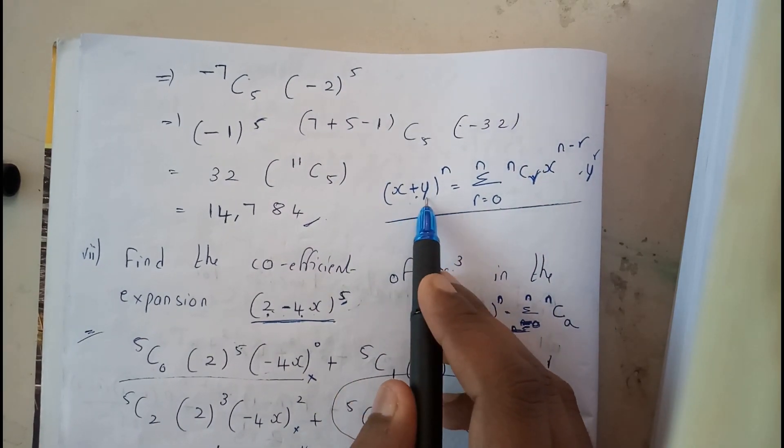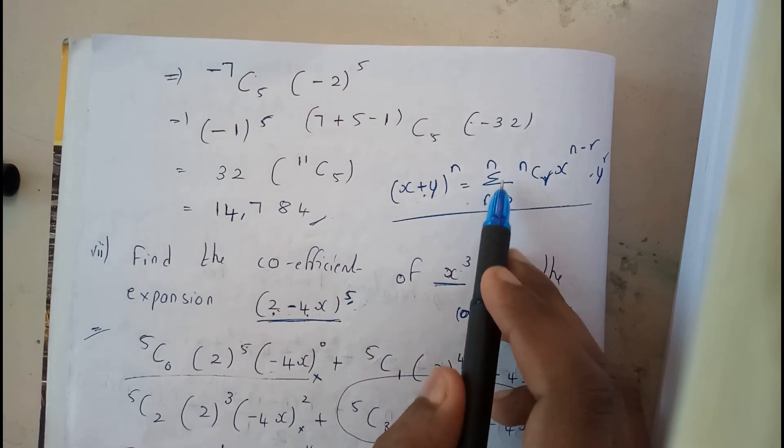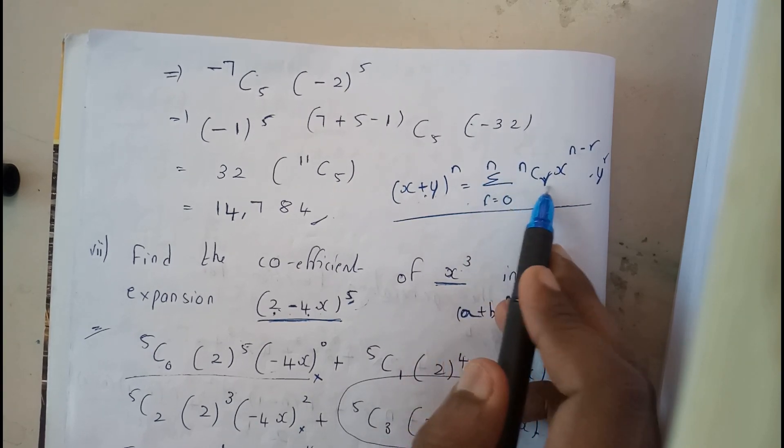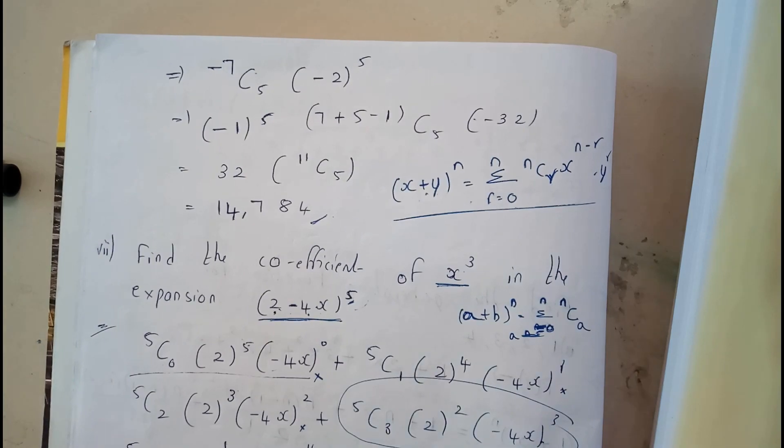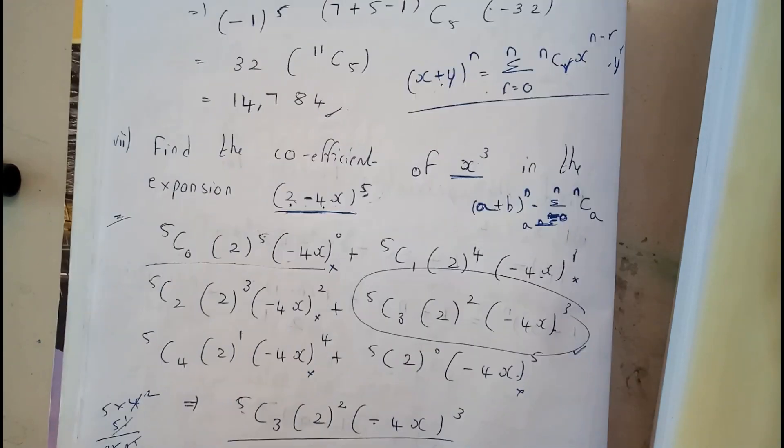x plus y whole power n is equal to sigma r equals 0 to infinity, nCr, x power n minus r, y power r. I hope everyone got a small idea on this.